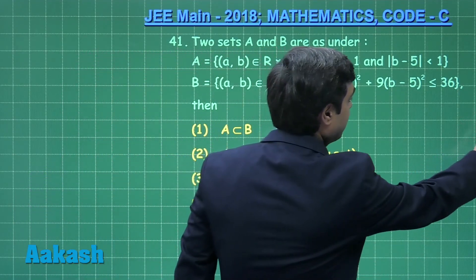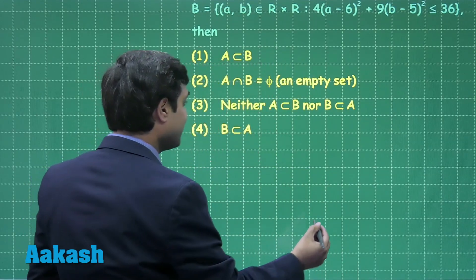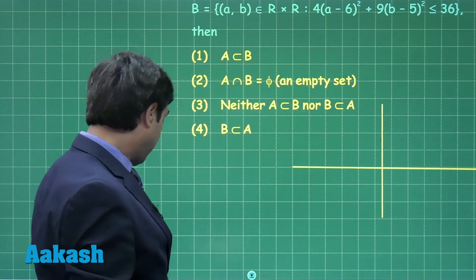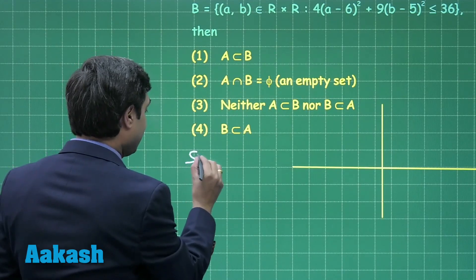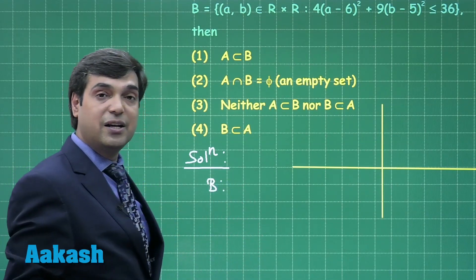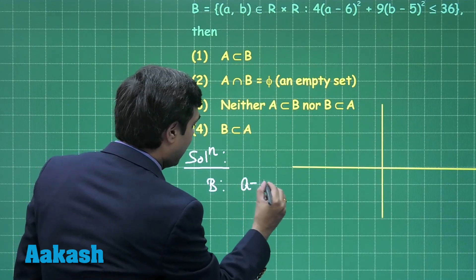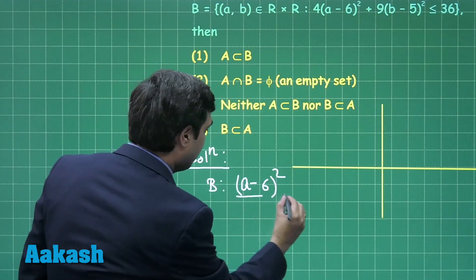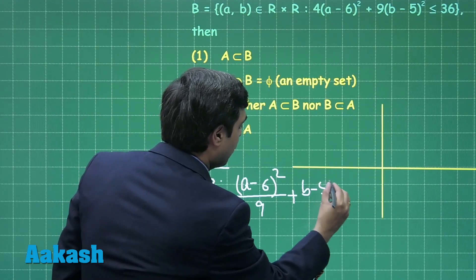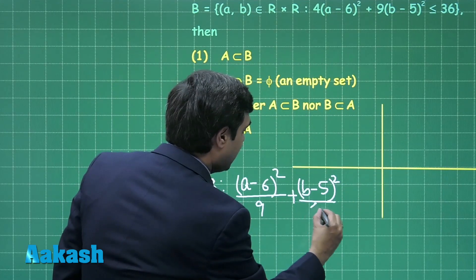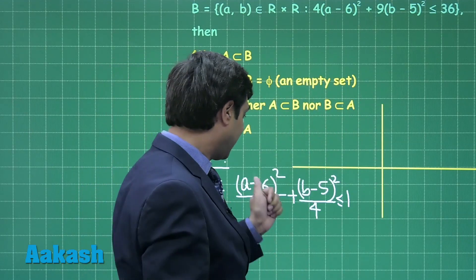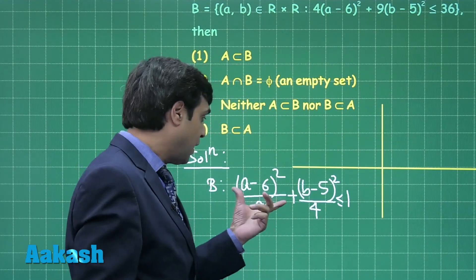Starting the question by considering the Cartesian system. Set B is talking about the interior of an ellipse, which can be written as a minus 6 whole square divided by 9 plus b minus 5 whole square divided by 4 less than or equal to 1. Treating a and b as Cartesian coordinates, this ellipse has center at 6 comma 5.